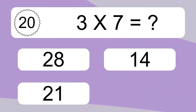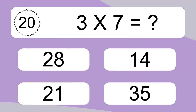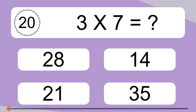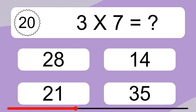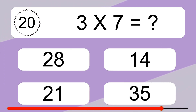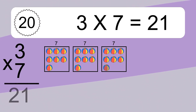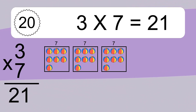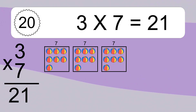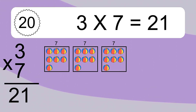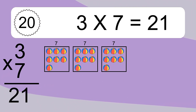3 times 7 equals what? 3 times 7 equals 21. We have 3 boxes, and each box has 7 colorful balls inside. If you count all the balls in all the boxes together, you will have 3 times 7 balls. This equals 21 balls.